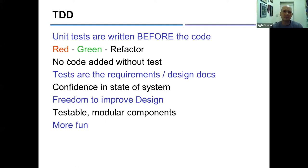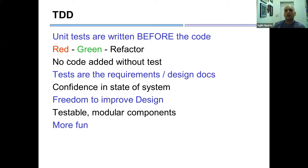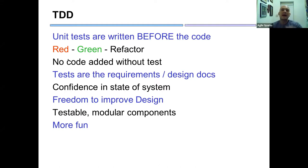Unit testing is a test where you test a unit. In an object-oriented language like Java, a unit is just a class. A unit test tests only that one class in isolation — which has lots of benefits. If you find a bug, you know it's in that one class. You can test units as you're building, rather than waiting until the entire program is written.